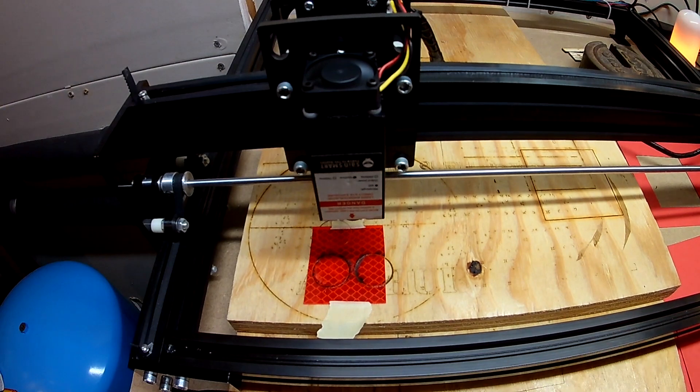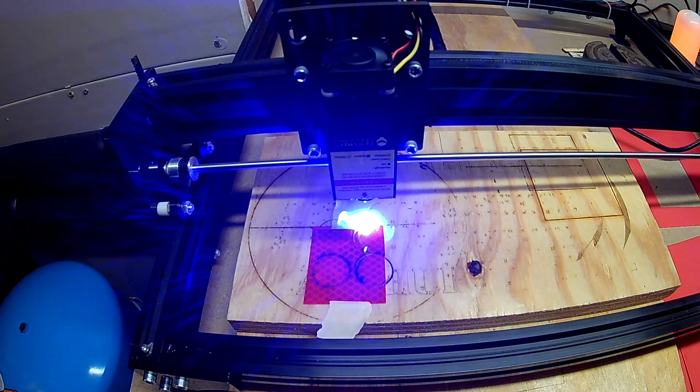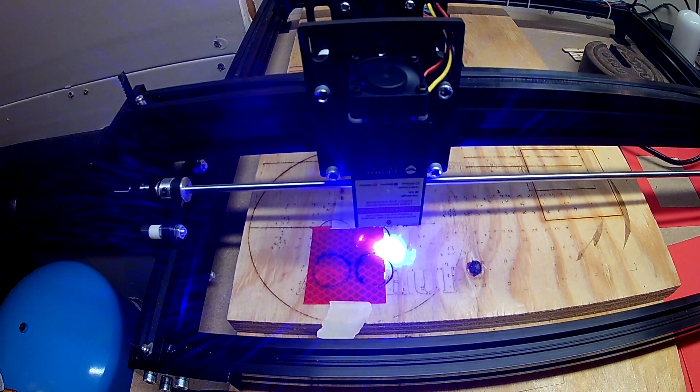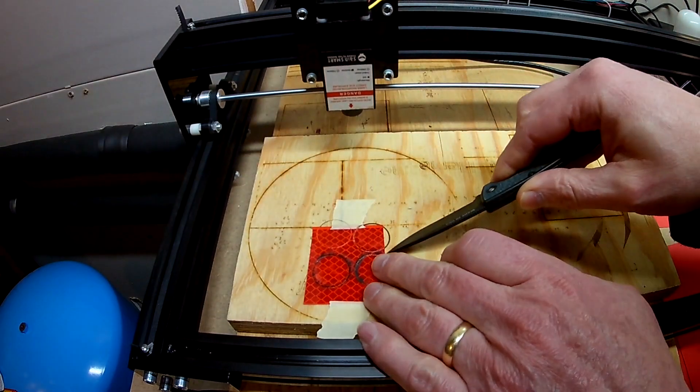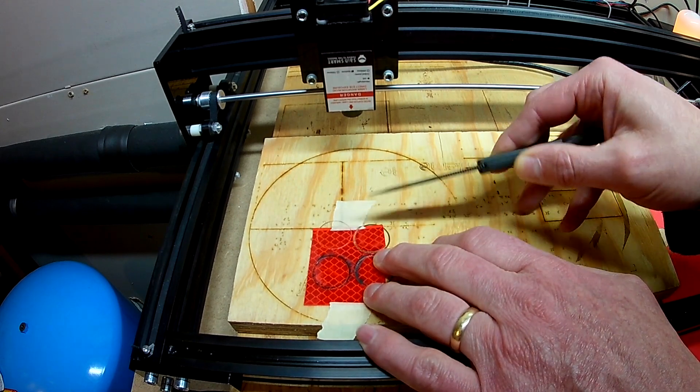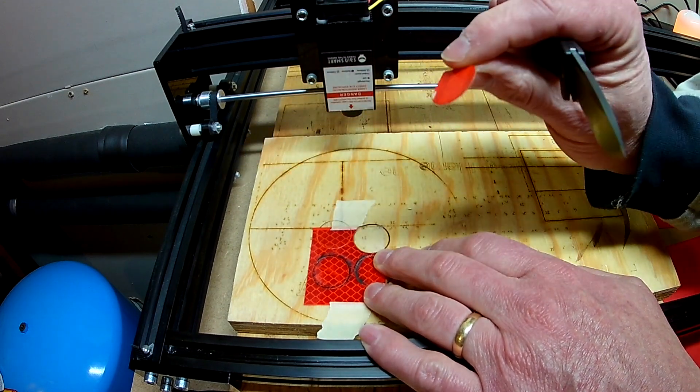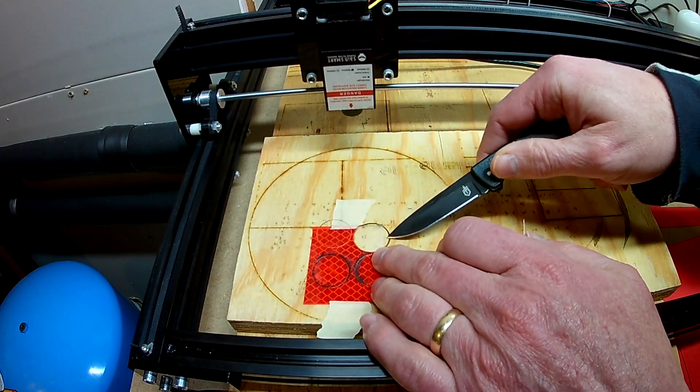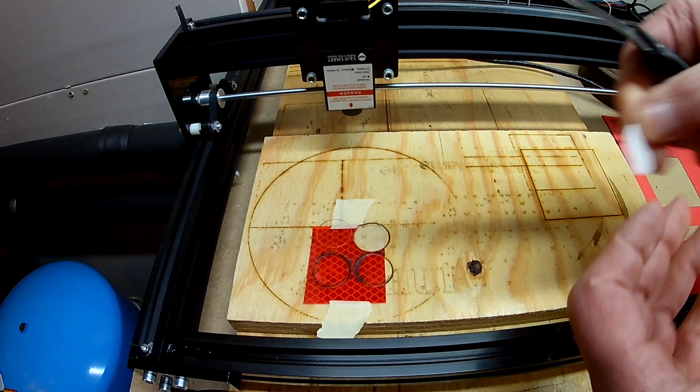Let's try another test. This will be 300 millimeters per minute at 100% power. We'll see if that cuts through everything. Well that does get through the reflective tape, but it does not get through this clear plastic backing.